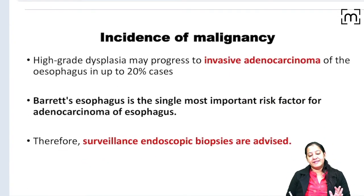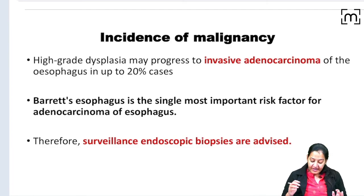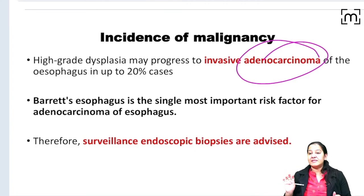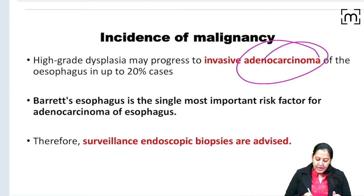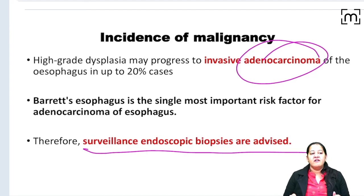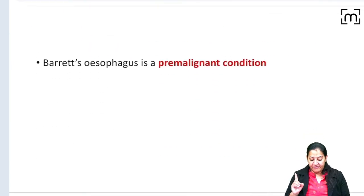Regarding malignancy: Barrett esophagus is a pre-malignant condition. If not treated, it can convert into adenocarcinoma of the esophagus. In the esophagus we have two types of cancer — squamous and adeno — and Barrett esophagus increases the risk of adenocarcinoma, not squamous. Therefore, surveillance biopsies are required every six months or annually to look for dysplasia. If high-grade dysplasia is already present, resection is advised to prevent conversion to malignancy. Barrett esophagus is an important risk factor for adenocarcinoma.